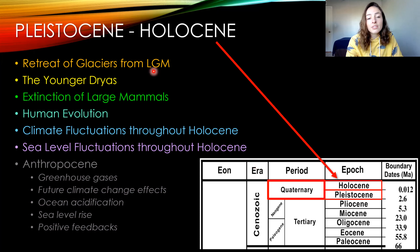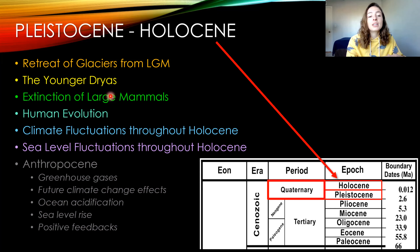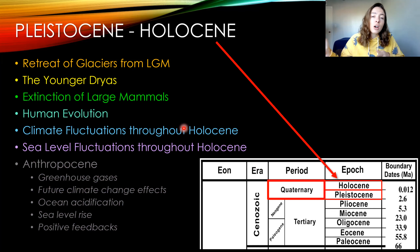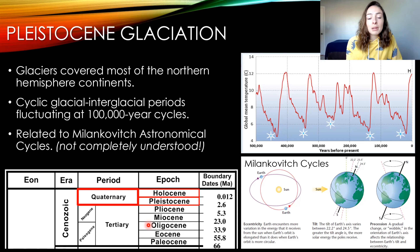In today's video we're going to be talking about the retreat of the glaciers from the last glacial maximum, the Younger Dryas cool period, the extinction of large mammals, a little bit about human evolution, climate fluctuations throughout the end of the Pleistocene into the Holocene, and sea level fluctuations — just to set up our topics for the next video on the Anthropocene.